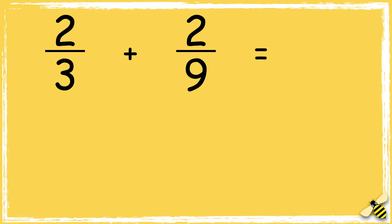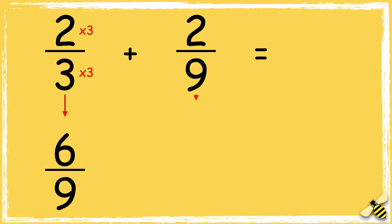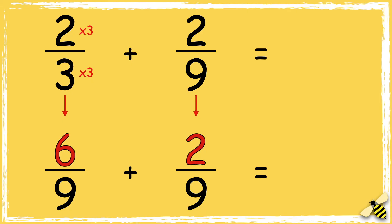So I can make both denominators 9. We need to multiply 3 by 3 to make 9, so we also need to multiply the numerator by 3 — 2 times 3 is 6. As two-ninths already has 9 as its denominator, we don't need to change this fraction. Now that our denominators are the same, we can add the numerators: 6 add 2 equals 8, so the answer is 8 ninths.